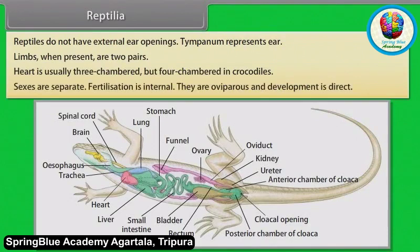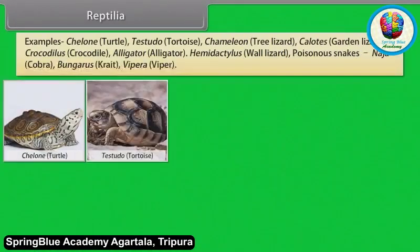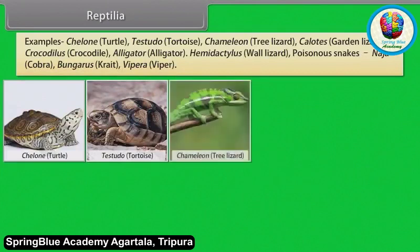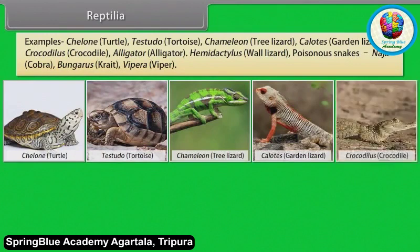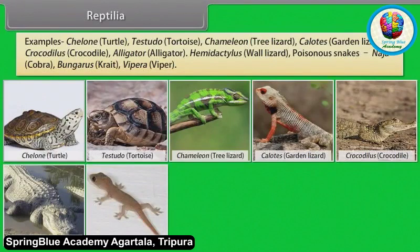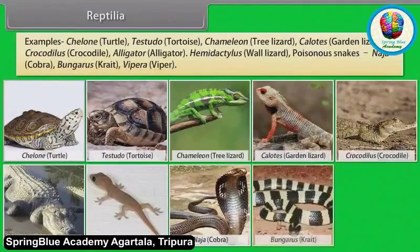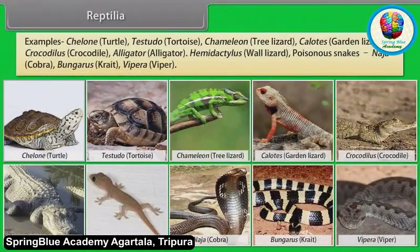Sexes are separate. Fertilization is internal. They are oviparous and development is direct. Examples: Chelone (Turtle), Testudo (Tortoise), Chamaeleo (Tree Lizard), Calotes (Garden Lizard), Crocodilus (Crocodile), Alligator, Hemidactylus (Wall Lizard). Poisonous snakes: Naja (Cobra), Bungarus (Krait), Vipera (Viper).